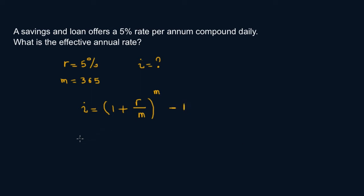Right, so this is just a plug-in. I equals 1 plus 0.05 over 365 to the power 365 minus 1.